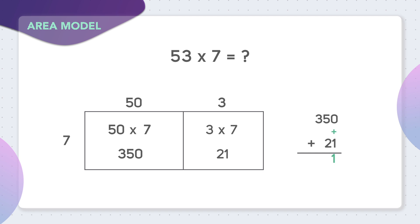When you do this, 0 plus 1 is 1. 5 plus 2 is 7. And 3 plus nothing is just 3. So 53 times 7 equals 371.